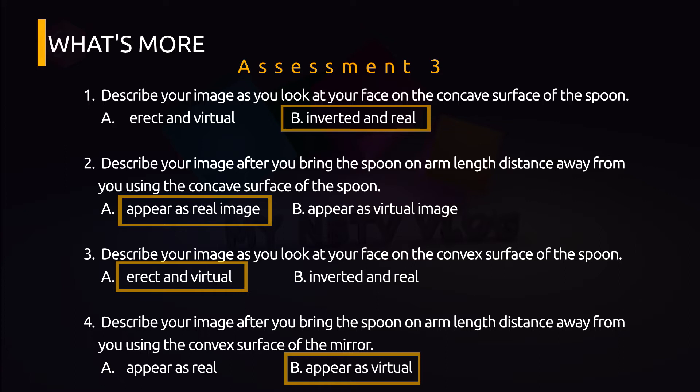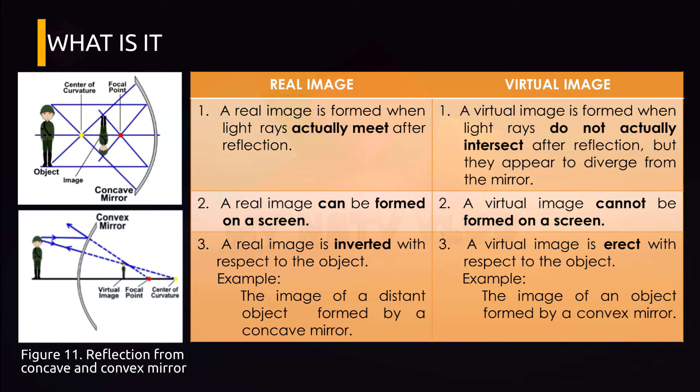So for further explanation about real and virtual, please refer to figure 11 and table on page 10 of your module. A real image is formed when light rays actually meet after reflection and it can be formed on a screen and inverted with respect to the object. On the other hand, a virtual image is formed when light rays do not actually intersect after reflection but they appear to diverge from the mirror. So a virtual image cannot be formed on a screen and is erect or upright with respect to the object.